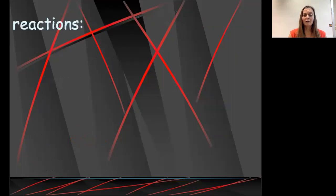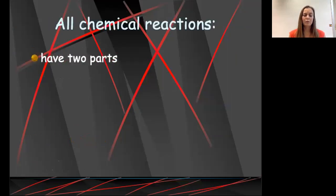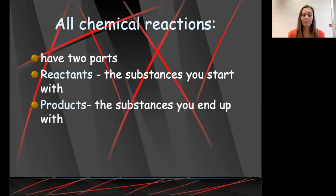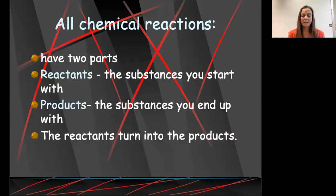So all of our chemical reactions are going to have two parts. They're going to have reactants, and those are the substances, or perhaps the single substance that you have at the beginning. We have products, which are the substances that we have at the end. Our reactants are rearranged, transformed, and become the product. And we write this with an arrow.